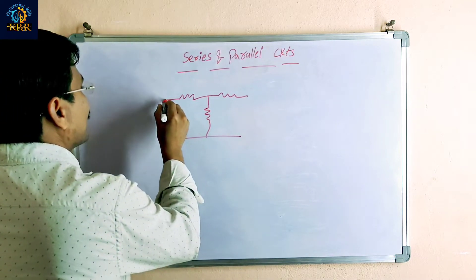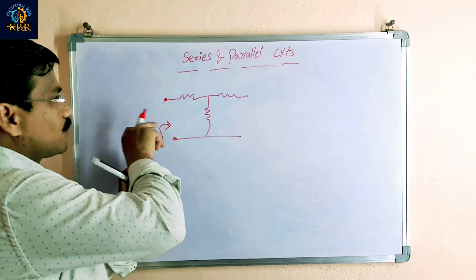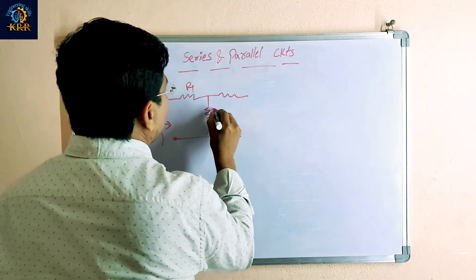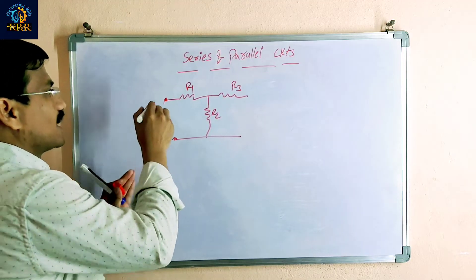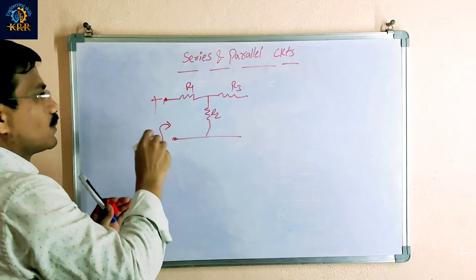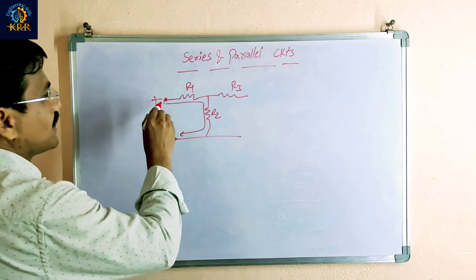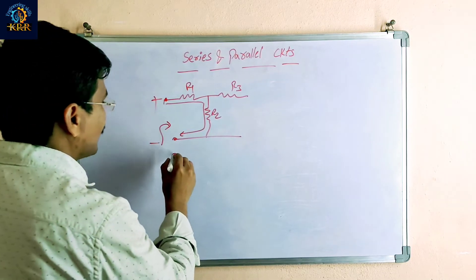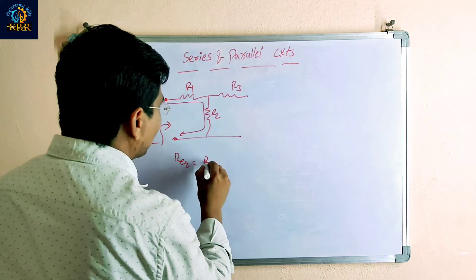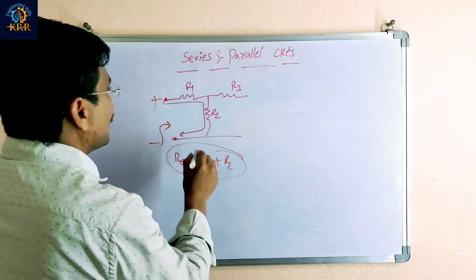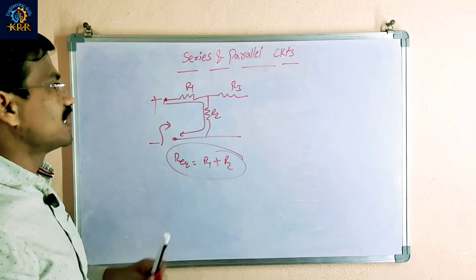This is the source side. You look at R1, R2, and R3 from the source side — plus and minus. The current is flowing in series. R equivalent, or R total, is equal to R1 plus R2. These two elements are in series, so R equivalent equals R1 plus R2.